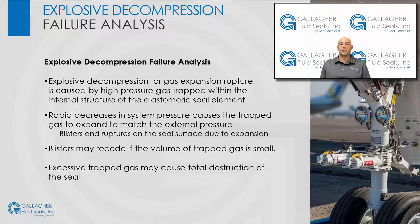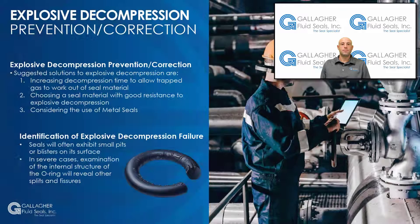If the volume of trapped gas is small, the blisters may recede as the pressure is equalized with little effect on seal integrity. Excessive trapped gas may cause destruction of the seal. To prevent or correct explosive decompression, the following solutions are recommended: increasing decompression time to allow trapped gas to work out of the seal material, choosing a seal material with good resistance to explosive decompression, and if the problem persists after trying those two steps, consider using metal seals.